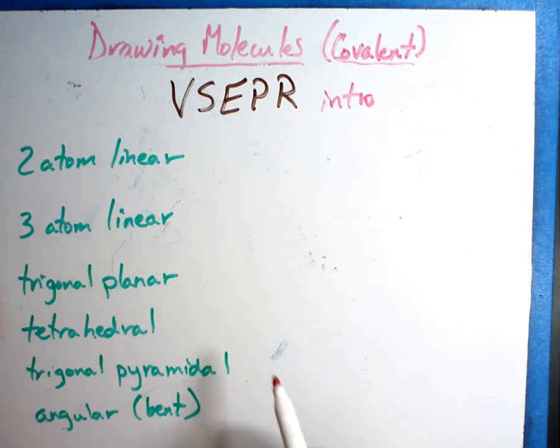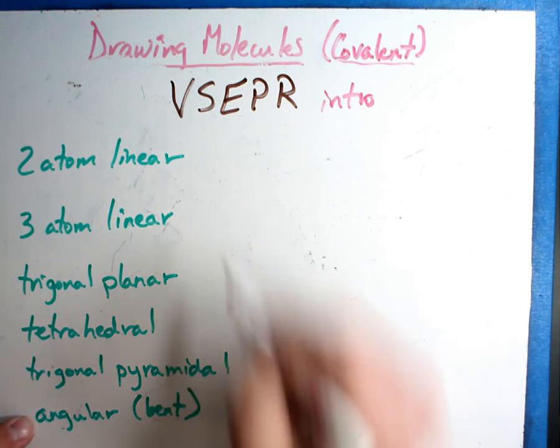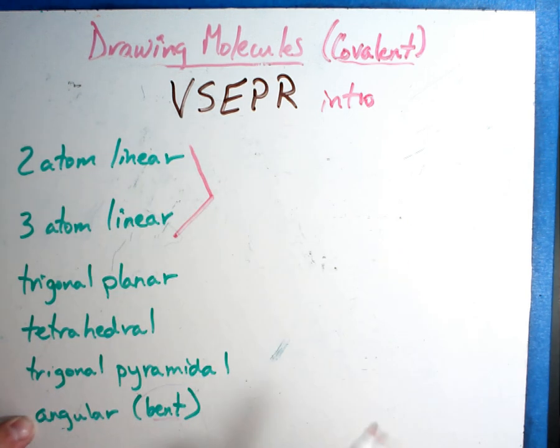They're going to talk about these shapes: two-atom linear, three-atom linear, trigonal planar, tetrahedral, trigonal pyramidal, either way is fine to say, and angular or sometimes called a bent shape. Some books put these together and call both of these just linear. But I want you to get the words down.